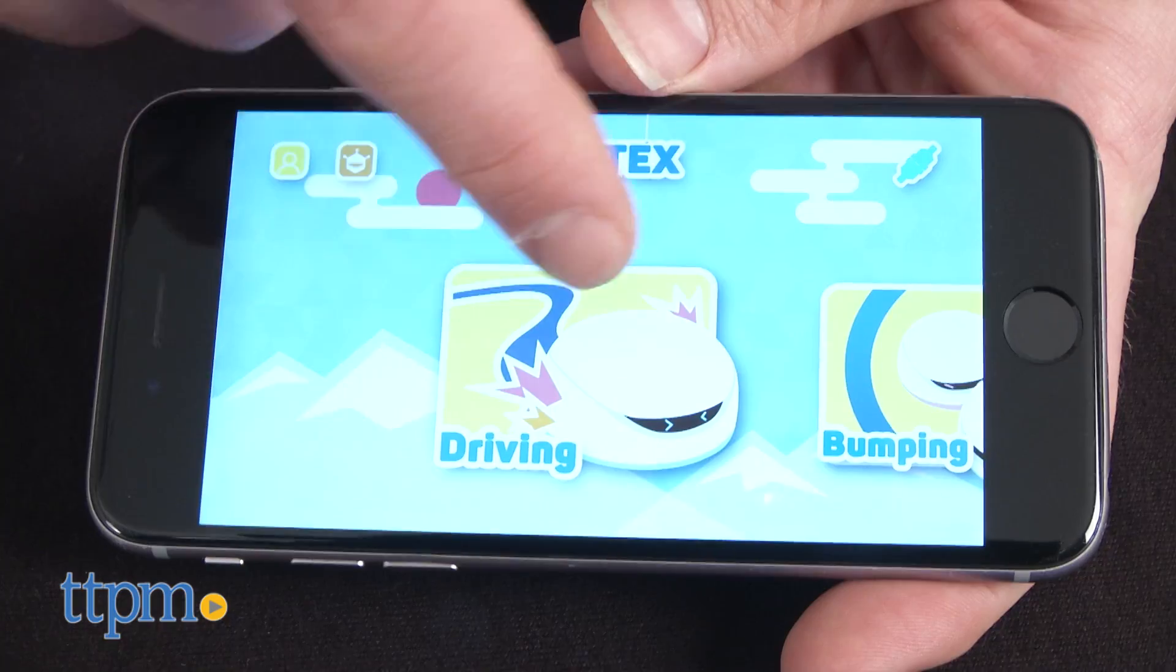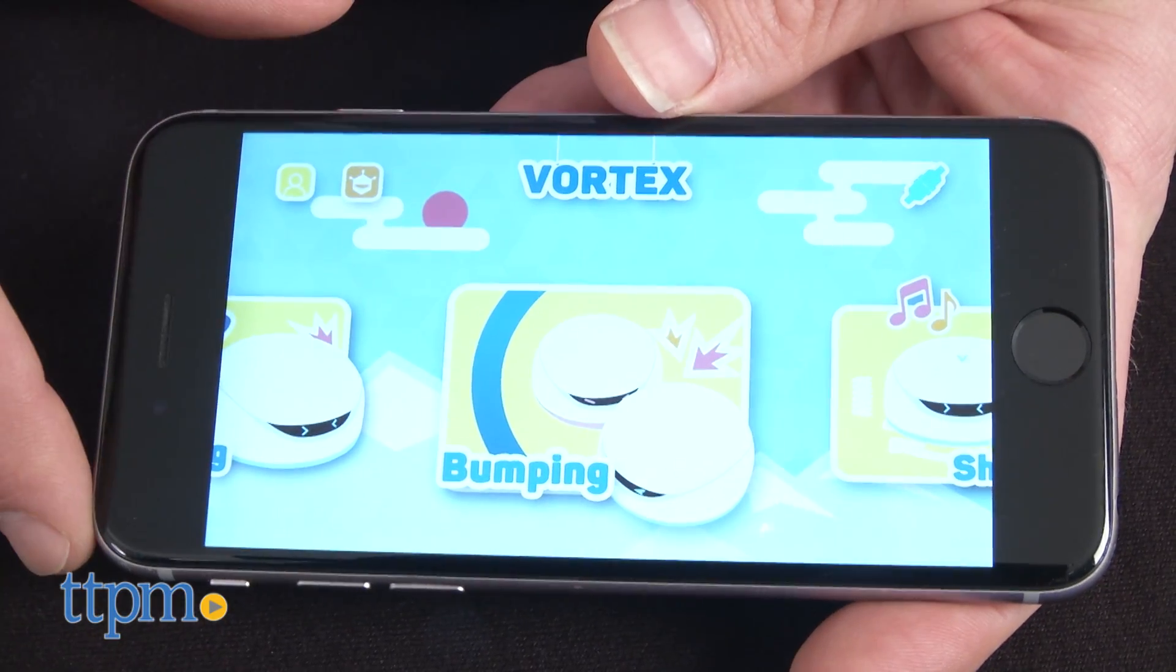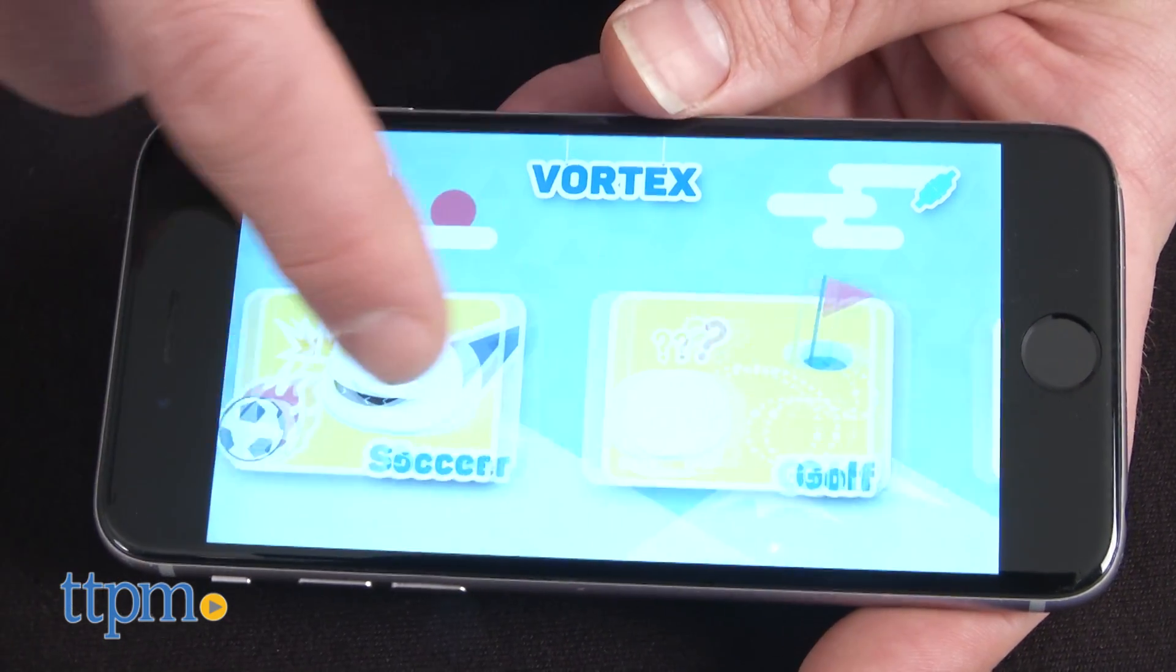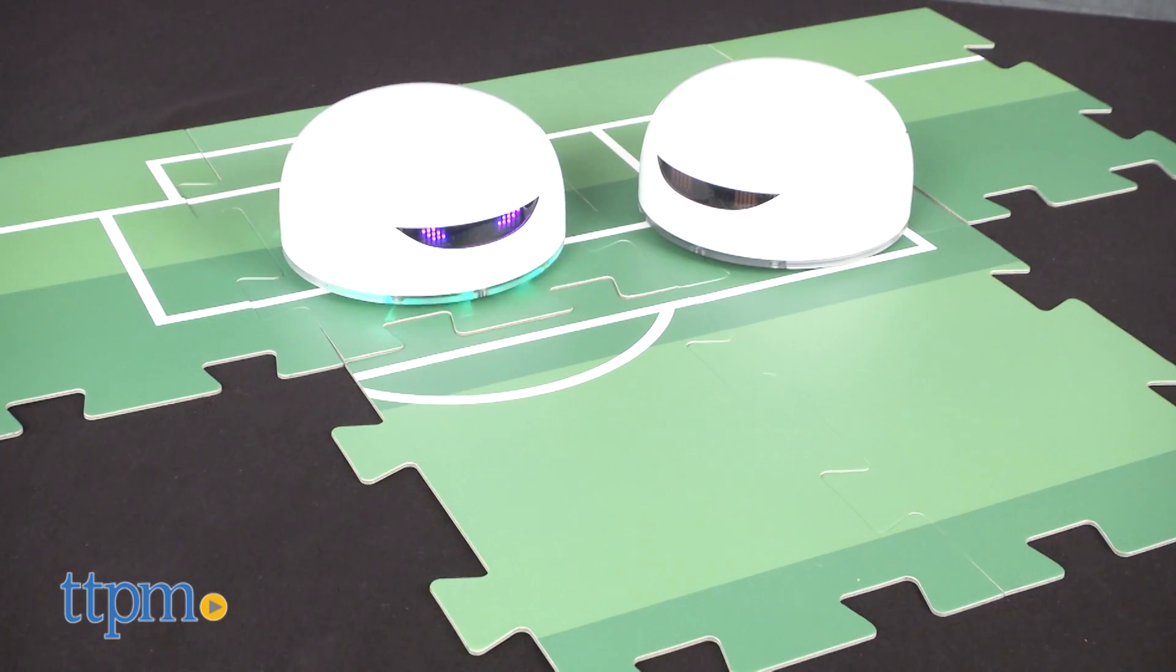Then it's time to look at the app. It includes 5 games: driving, bumping, shaking, soccer and golf, and a jigsaw floor map that enhances play but isn't really necessary.